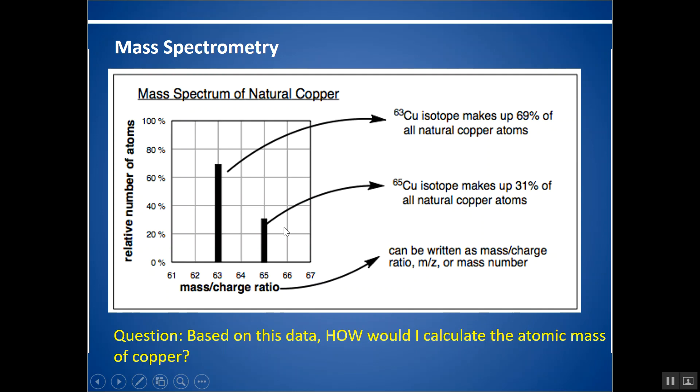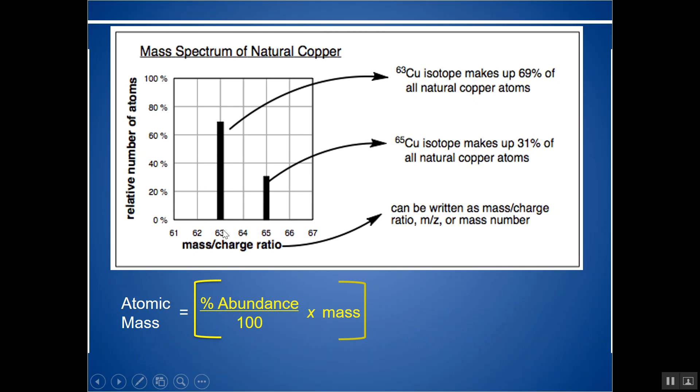So based on this data, how could you calculate the atomic mass of copper? You could do percent abundance over 100 times the mass of each isotope and add them together. If there's a third isotope you do the same thing. Sometimes percent abundance is called fractional abundance. What you're going to notice is whichever is the higher peak is going to be more abundant.